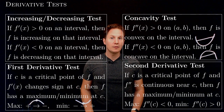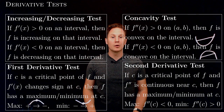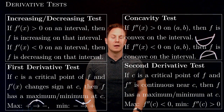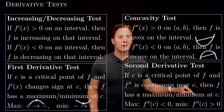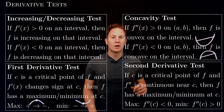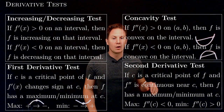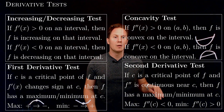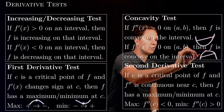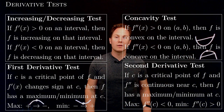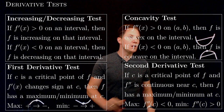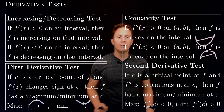Then we have the second derivative test, which tells us that if we have a critical point c of our function and the second derivative of the function is continuous near c, then the function must have a maximum or a minimum at c. A maximum if the second derivative at c is negative, and a minimum if the second derivative at c is positive. This makes sense with the concavity test, because having a negative second derivative at c means the function's graph is concave, therefore at c we have a maximum, whereas a positive second derivative at c means the function near c is convex, therefore we have a minimum at c.